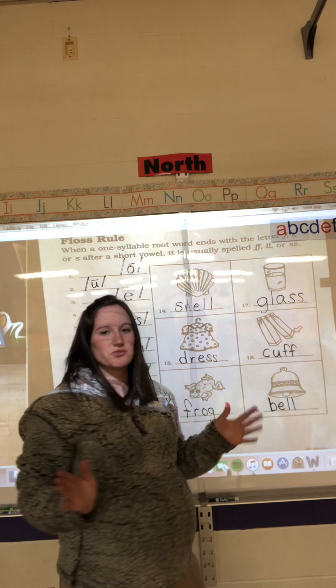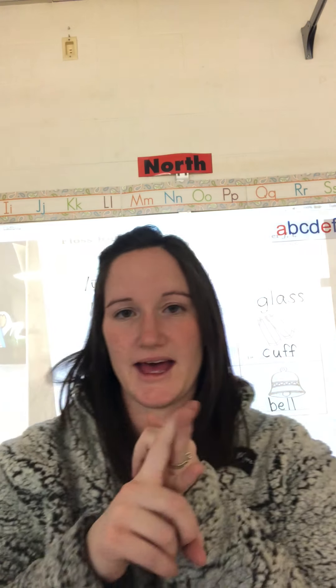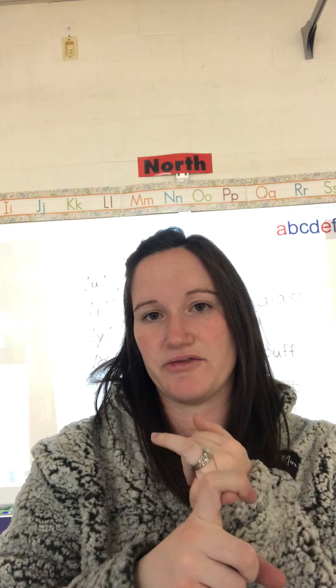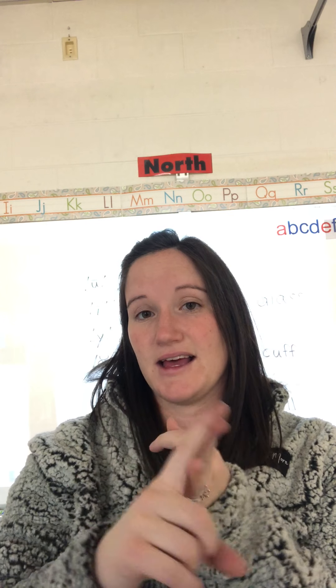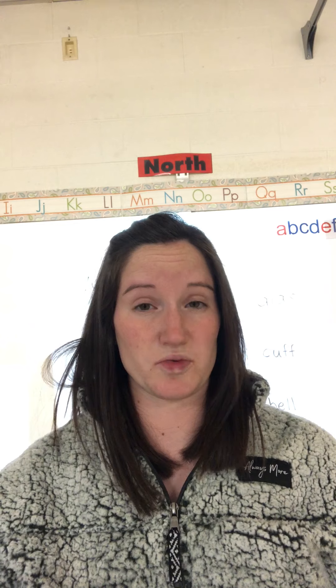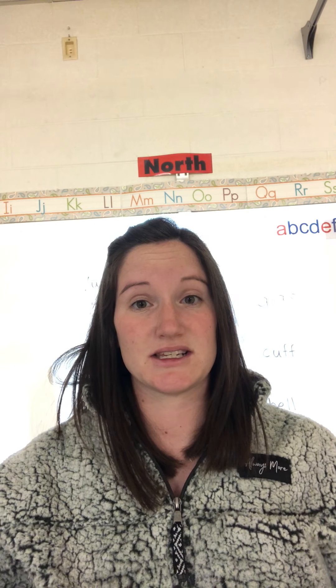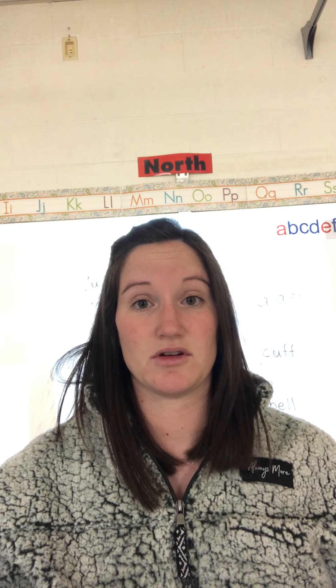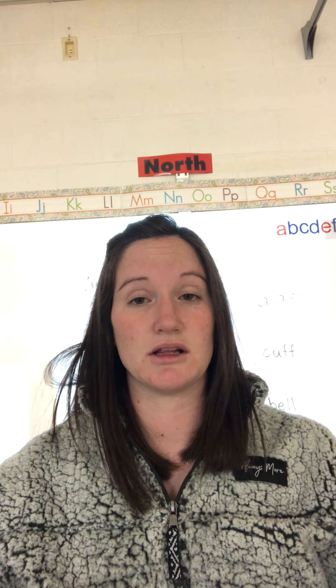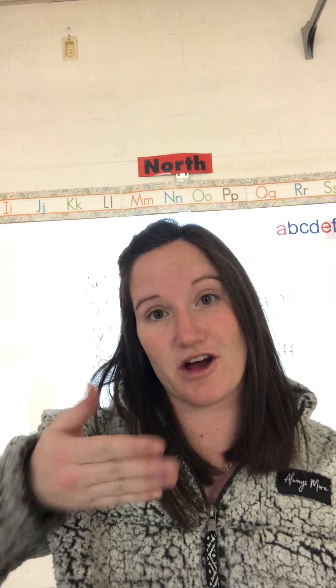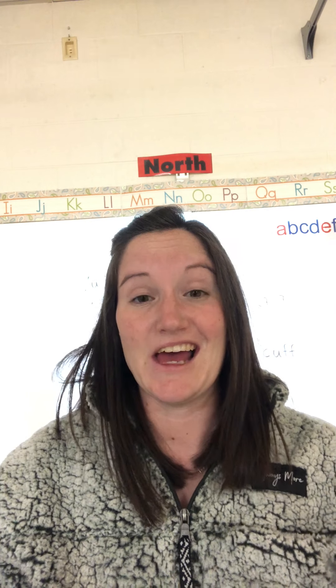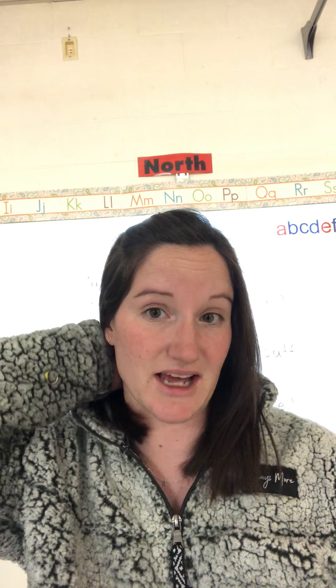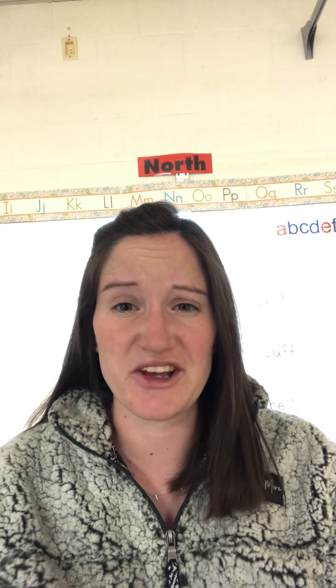And then our last one — it's a picture of a bell: B-E-L-L. So the floss rule works with F, S, L — doubled as FF, SS, LL. When we code those words, we know they don't say two separate sounds — they just say their single sound. So we cross off one of them. If you have any questions, please don't hesitate to ask. I'll be sending this out to you shortly, and I really hope to see you guys soon. We really miss you guys. Bye!